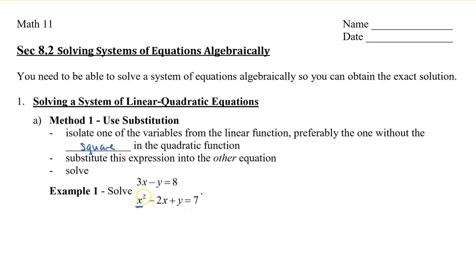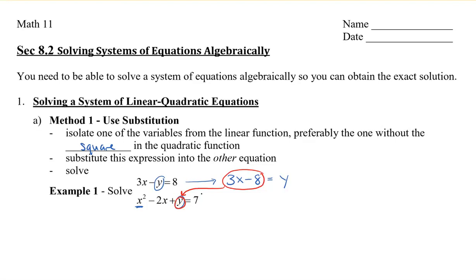Since x is being squared, in my linear equation I want to isolate the y so that I can substitute it into the other y. I'm going to move the 8 to the left side, so I have 3x minus 8, and isolating my y to the right, I have y equals 3x minus 8. I'm going to take that expression and substitute it in for the y, so now I have x squared minus 2x plus (3x minus 8) equals 7.